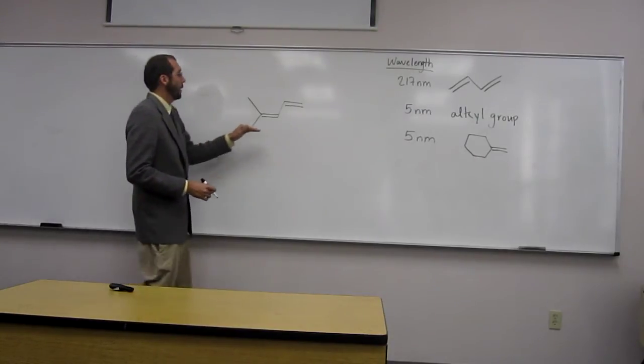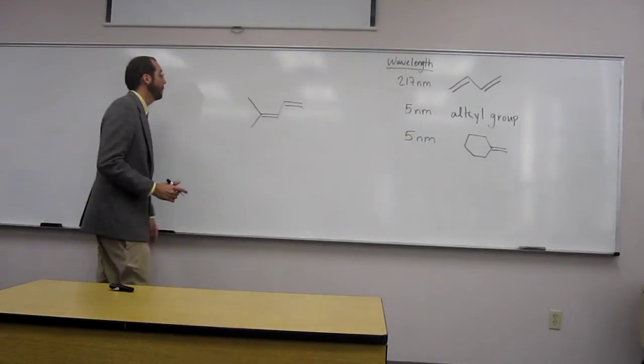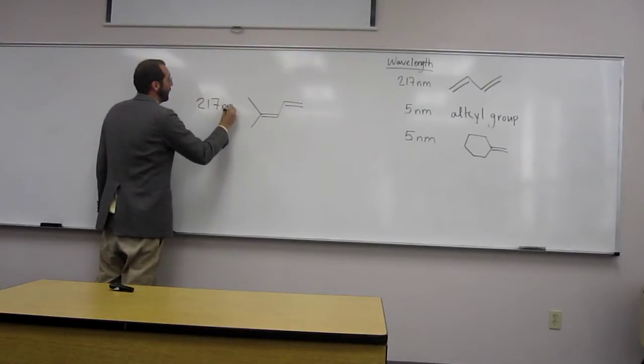So anyways, here we see we've got the conjugated non-cyclic double, or diene system. So that's going to start us at 217 nanometers.